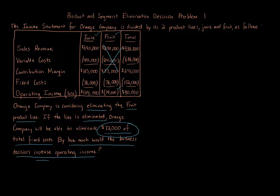There are many ways to calculate this. You can go through the totals: eliminate the contribution margin, reduce fixed costs by $72,000. That means of the $76,000 fruit fixed costs, only $4,000 gets brought over to juice. You can then recalculate the total and compare before and after to find the change — increase or decrease — in operating income.